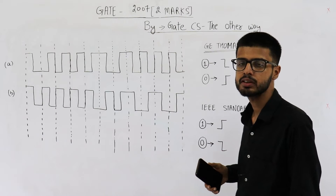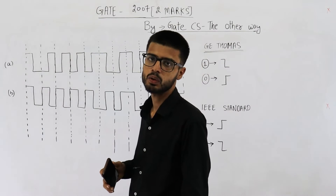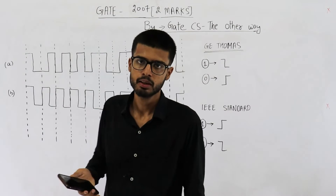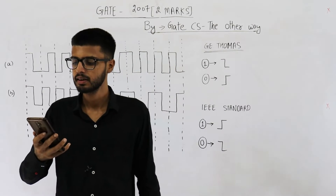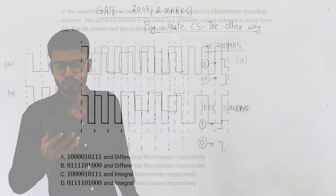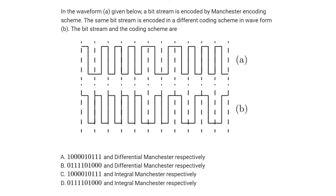This question is for two marks. Just have a look at the statement. They are saying: in waveform A given below, a bitstream is encoded by the Manchester encoding scheme. The same bitstream is encoded in a different coding scheme in waveform B. The bitstream and coding scheme are?